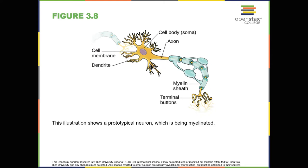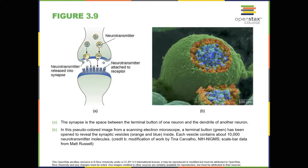In healthy individuals, the neuronal signal moves rapidly down the axon to the terminal buttons, where the synaptic vesicles release neurotransmitters into the synapse. The synapse is a very small space between two neurons and is an important site where communication between neurons occurs. Once neurotransmitters are released into the synapse, they travel across the small space and bind with corresponding receptors on the dendrite of an adjacent neuron. Receptors, which are proteins on the cell surface where neurotransmitters attach, vary in shape, with different shapes matching different neurotransmitters.